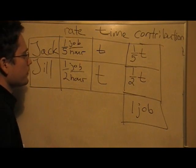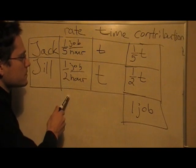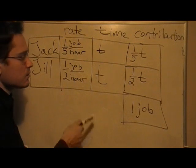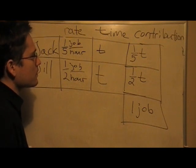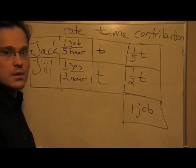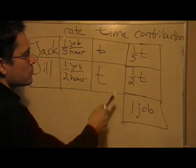Likewise with Jill, her rate is one job every two hours. You multiply that by t, where t is time. And so, you have her total contribution to the completion of the job is one-half t.